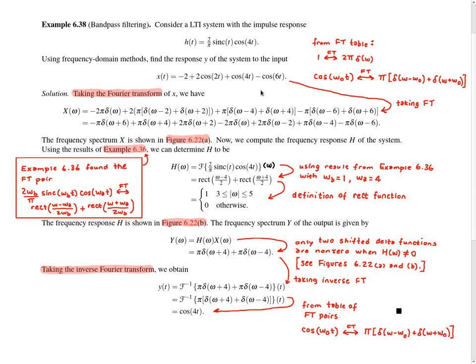In this example, we're given an LTI system with the impulse response h, where h is given by this particular formula here. We're asked to use frequency domain methods to find the response y of the system to the input x, where x is given by this particular formula here. The way we're going to approach this problem is to use the Fourier transform, and to begin with I'm going to compute the Fourier transform of h and x — that is, take the Fourier transform of both equations.